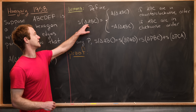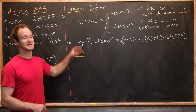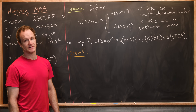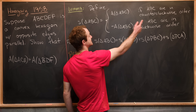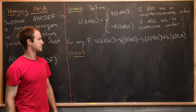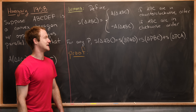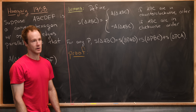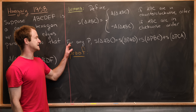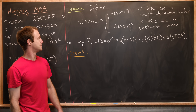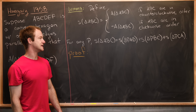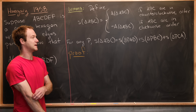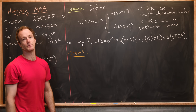Let's define S of triangle ABC, the signed area, to be equal to the area of triangle ABC if ABC are in counterclockwise order, and minus the area of triangle ABC if ABC are in clockwise order. What we will prove is that for any point P in the plane, S of triangle ABC equals S of triangle PAB plus S of triangle PBC plus S of triangle PCA.